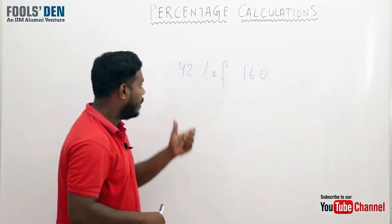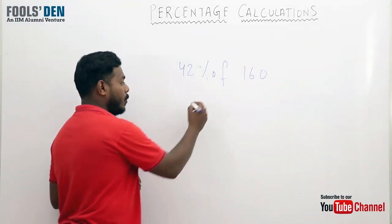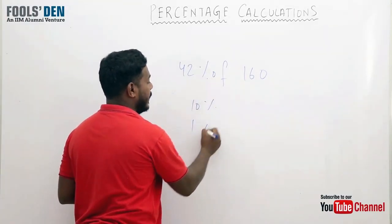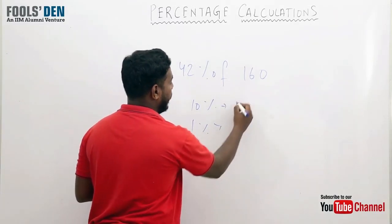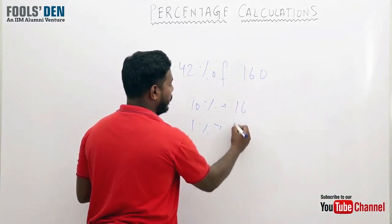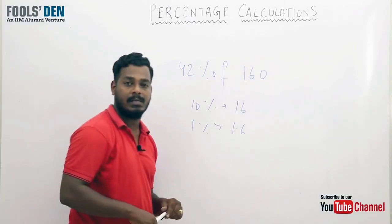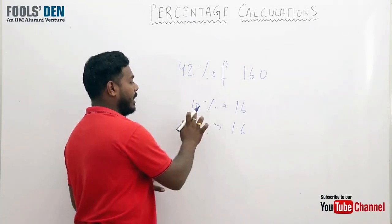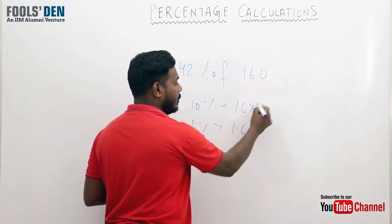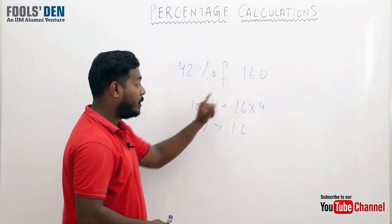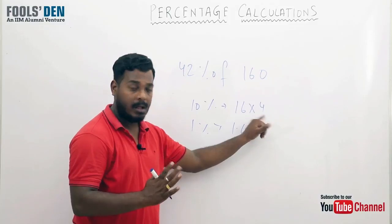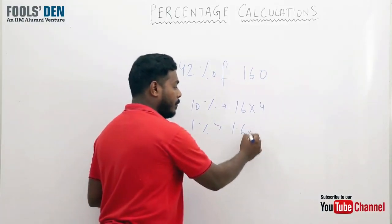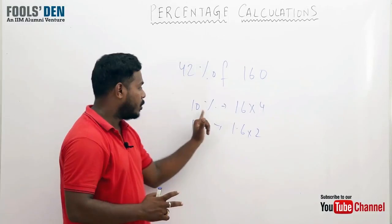Let's see some more examples. Suppose I need to calculate 42 percent of 160. First I'll calculate 10 percent and 1 percent. 160's 10 percent would be 16, and 1 percent would be 1.6. Now for 42 percent, I need to take 10 percent four times because 10 percent into 4 is 40 percent, and 1 percent twice, because 1 into 2 is 2.